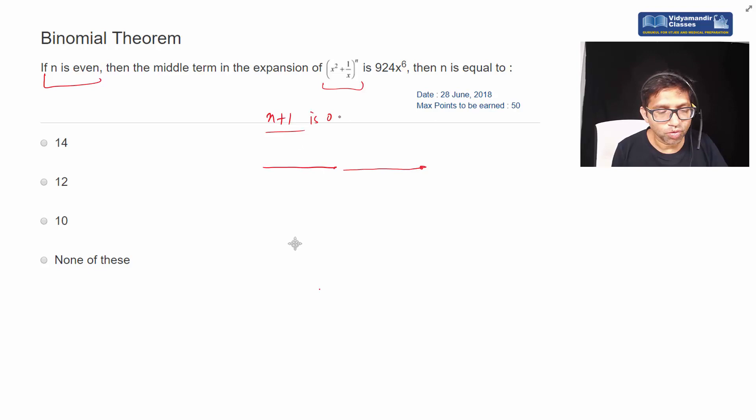To get n by 2 terms here only, and n by 2 terms here will be the middle term. n by 2 before the middle term and n by 2 after the middle term. The middle term only will be n by 2 plus 1. This is r plus first term.